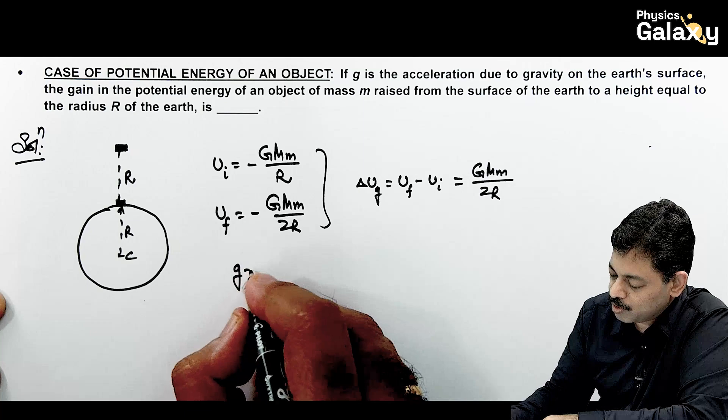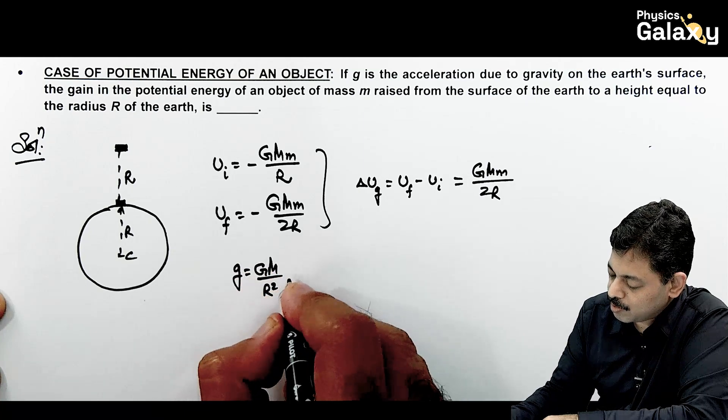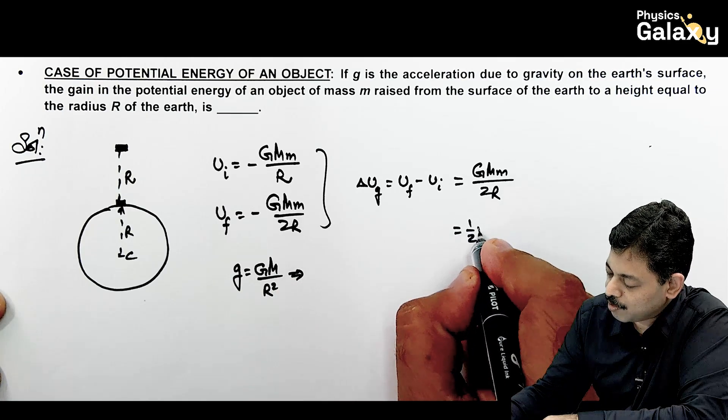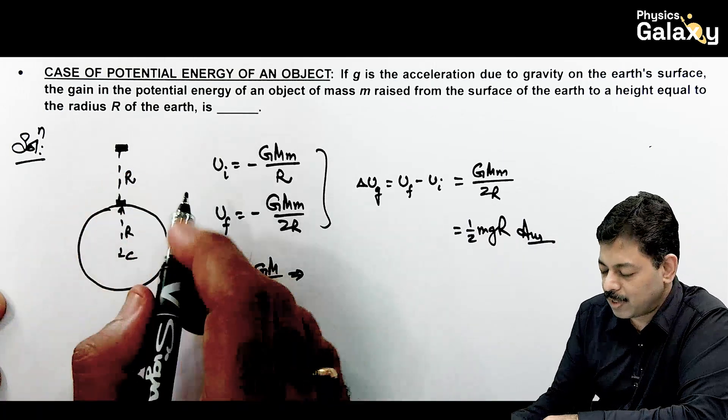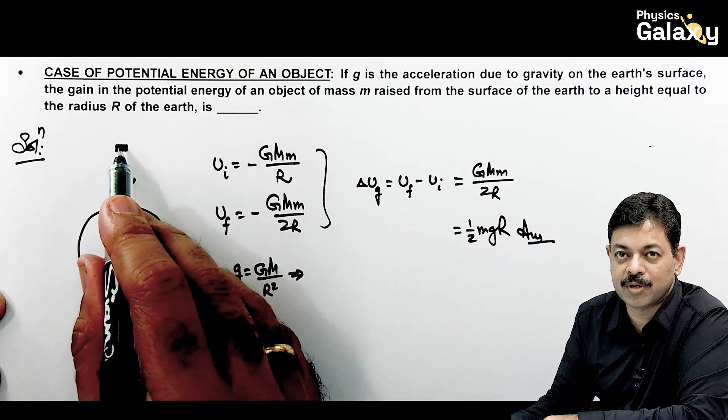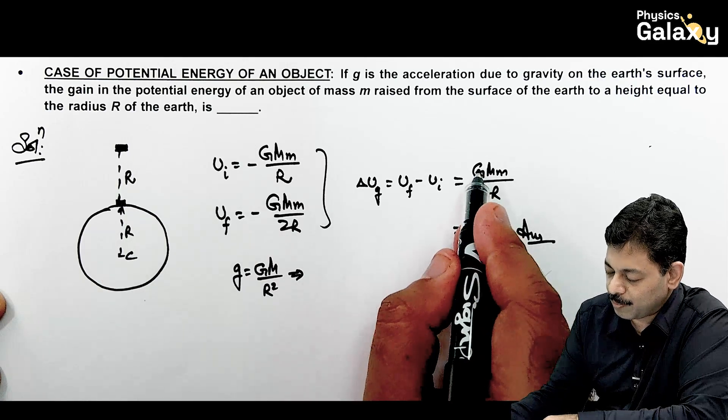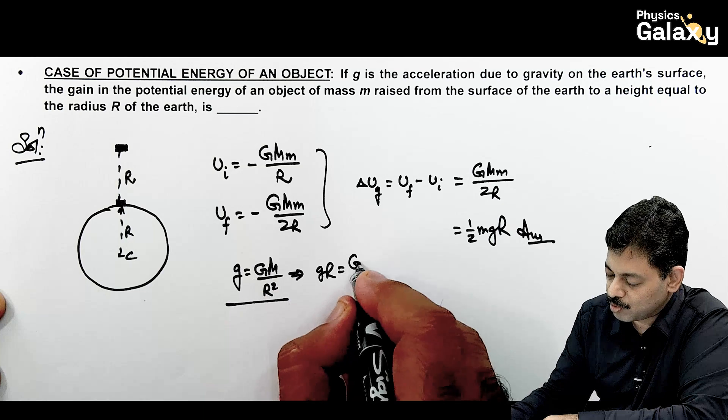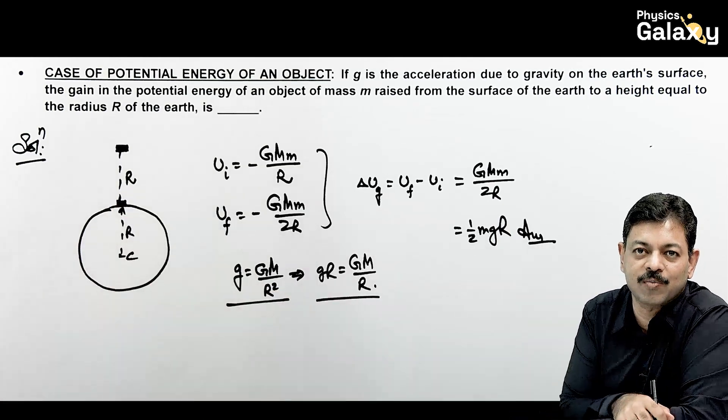This gives GMm by 2R. So here in this situation, small g we write as GM by R squared. So in this situation, GM by R can be written as gR. So this becomes half MgR. That is the result of this problem. So when we raise a position of any body, initial and final potential energy difference you can calculate, or capital G you can substitute in terms of small g. Using this for any such case, you can calculate the rise in potential energy.